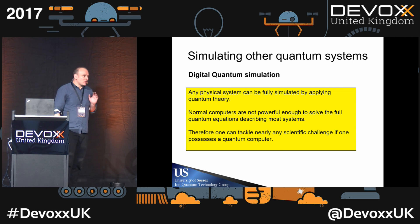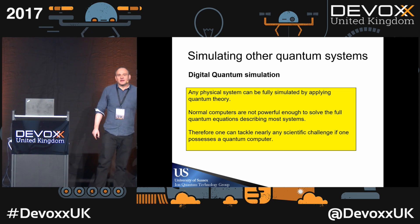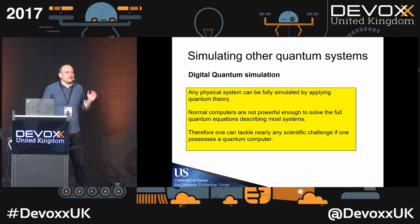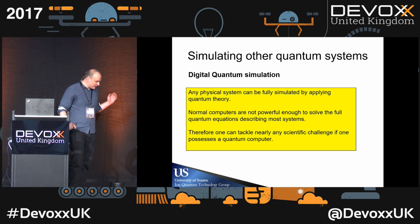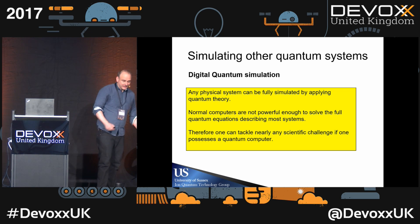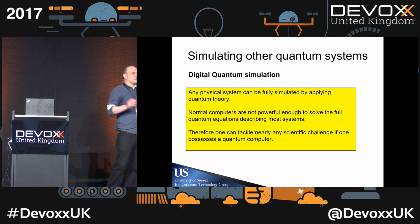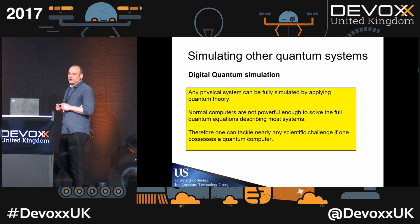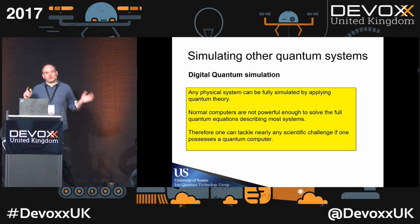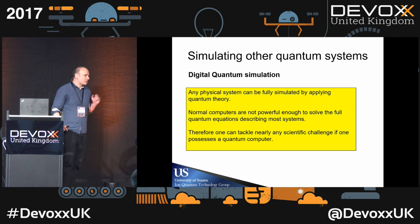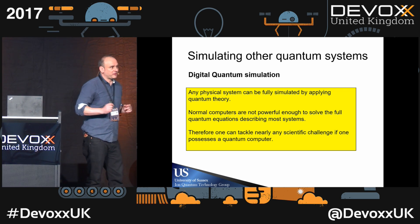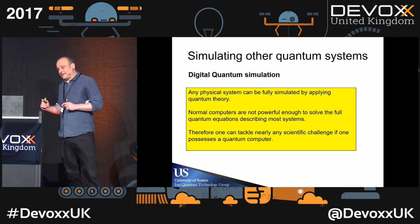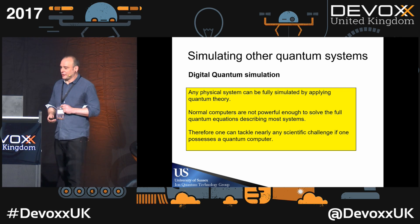Another reason why quantum computers are so interesting is that they allow us to simulate other physical systems. Quantum physics is the underlying theory which governs everything — it governs why this chair is black, it governs the conductivity of materials, it explains the world around us. Conventional computers do a terrible job simulating quantum physics because they're just not powerful enough, so you have to do a lot of approximations. Quantum computers can actually simulate the dynamics of these systems exactly, and that's why this is a very powerful thing.